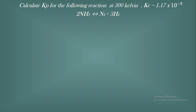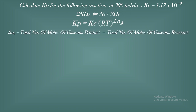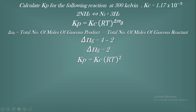For the second equation 2NH₃ ⇌ N₂ + 3H₂, the product side has more moles than the reactant side, so Kp should be greater than Kc. First, we find ΔnG: total moles of gaseous products minus total moles of gaseous reactants = (3+1) − 2 = 4 − 2 = 2.